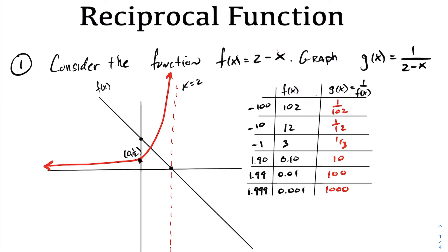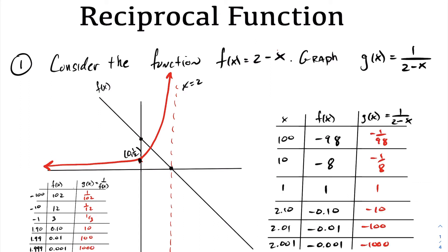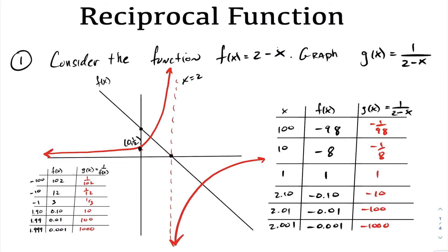Now let's examine the graph as we approach 2 from the right-hand side. We can see that g(x), the reciprocal function, approaches negative infinity as we get closer to the vertical asymptote. The function f(x) is decreasing, so the reciprocal function is increasing — but as f(x) approaches 0 from below the x-axis, which is a very small negative number, the reciprocal function approaches negative infinity.